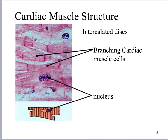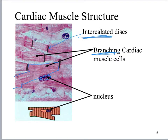Desmosomes are what cause the intercalated discs to stain darker — they absorb more stain. Desmosomes are a special type of junction that helps hold the cells together. Here's your classic cardiac cell. You can see how it has this branching pattern. Here are the intercalated discs that are absorbing your stain. Branching patterns and intercalated discs are super important for you to know and notice.